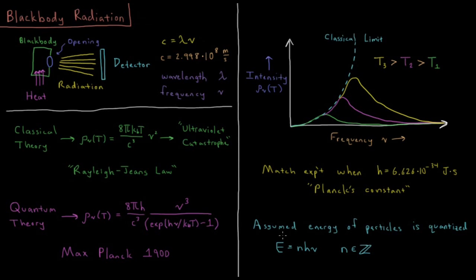What Planck assumed is that the energy of the particles inside this black box was quantized. He said that the energy was some integer times Planck's constant times the frequency of the light. This n value is an integer - n belongs to this set of integers. So n has to be 1, 2, 3, etc. It can't be any value in between.